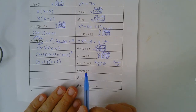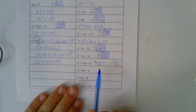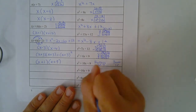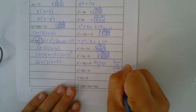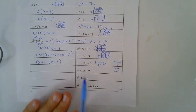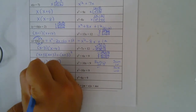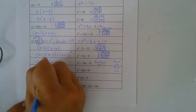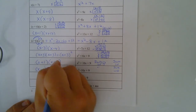Same idea here: if I had x squared minus 10x plus 9, I would have factors of 9, but they have to sum to be negative 10. What would happen is instead of both of these being positive, both have to be negative. So this would be x minus 1 times x minus 9.